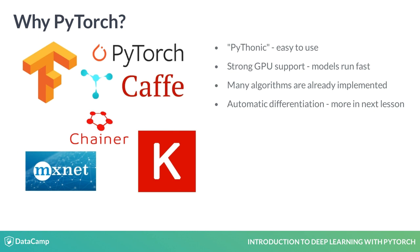Calculating derivatives and gradients is a very important aspect of deep learning algorithms. Luckily, PyTorch is very good at doing it for us. Finally, the library is very similar to NumPy, making the switch from NumPy to PyTorch as painless as possible.